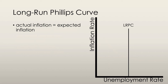The long-run Phillips Curve is the relationship between inflation and unemployment when the actual inflation rate is equal to the expected inflation rate. It is vertical at the natural unemployment rate because in the long-run any expected inflation rate is possible. This implies that there is no relationship at all between the inflation rate and the unemployment rate.